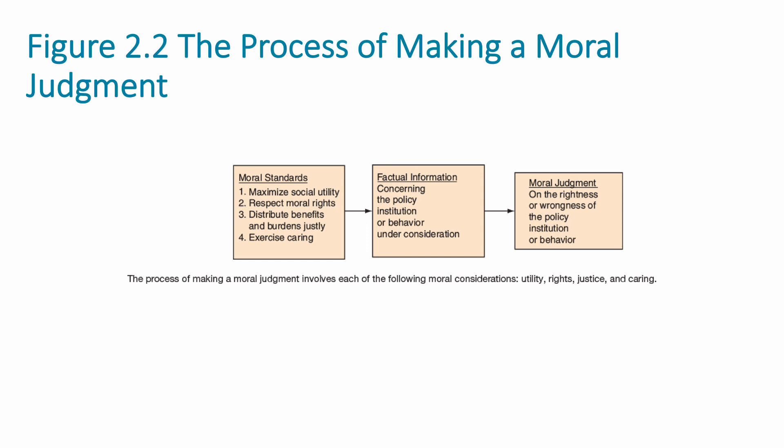This is a graphic from the textbook that highlights what that process would look like. We start with those four complementary moral standards: social utility, moral rights, the distributive justice issues of Rawls, and exercising care for our stakeholders. We then gather factual information concerning the policies, institutions, or behaviors under consideration, and ultimately we make our moral judgment. As you engage in your discussion boards, you're going to use this process to make decisions together as a group.